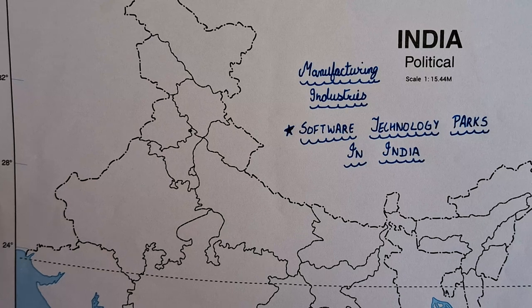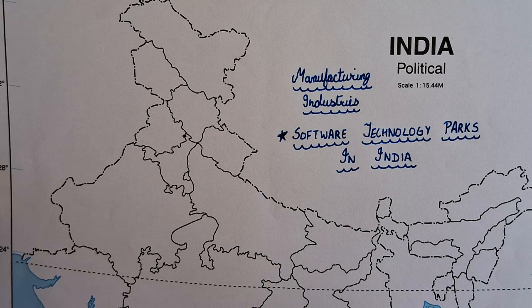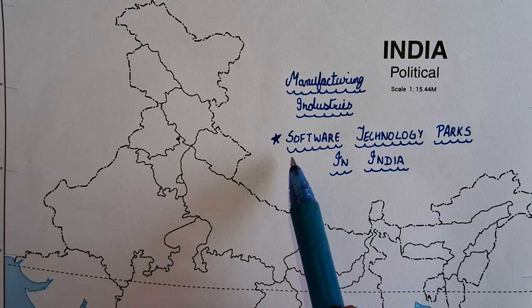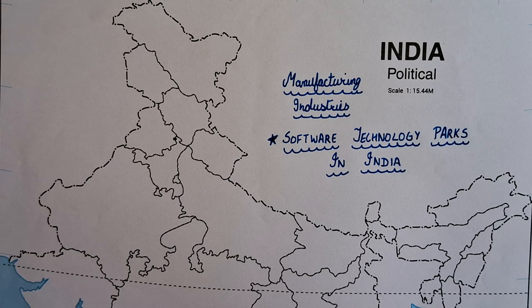Hello friends, today we are going to do the map of Class 10th, chapter of Geography — manufacturing industries. The topic for today's map is software technology parks in India. First of all, we will start with North India.